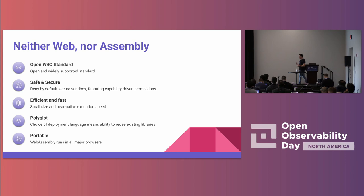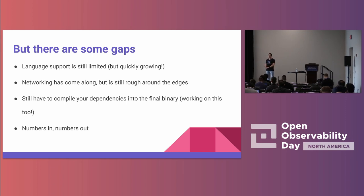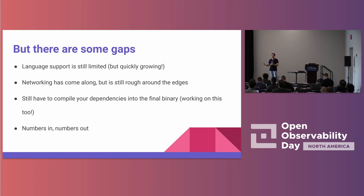Even with all the promise, there are still pretty large gaps in running WebAssembly on the server side. Language support is really great for some — Rust, C, Grain, AssemblyScript — but still limited. Things like Java and scripting languages don't work quite well with it yet, though it's quickly growing. I came from Cloud Native Wasm Day earlier today and there are constant talks about Python and Ruby support. Networking was a huge problem for a while — even though you can technically open a socket, it's still pretty rough around the edges.